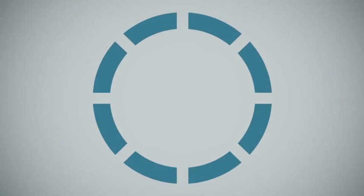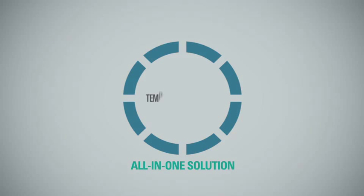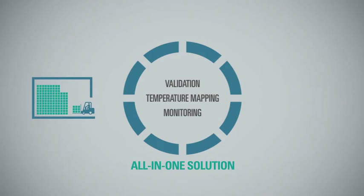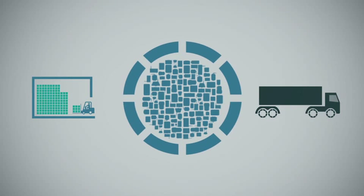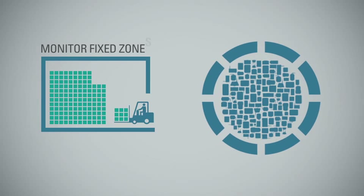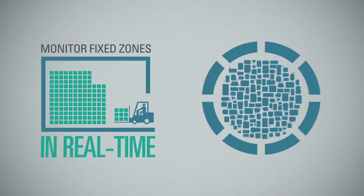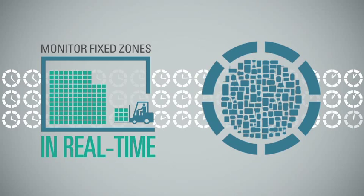InfoTrack provides an all-in-one solution for temperature mapping, validation, and monitoring of storage and shipping environments. Using our array of wired and wireless sensors, companies can monitor their fixed-temperature-sensitive zones in real-time, 24 hours a day, 365 days a year.